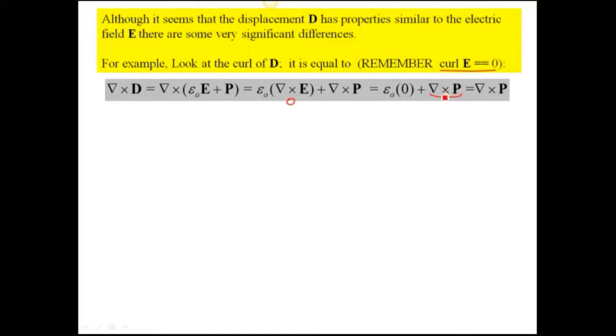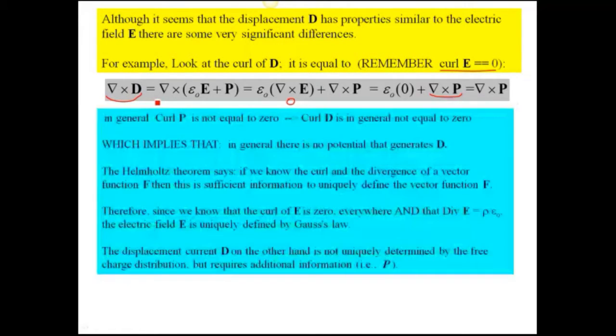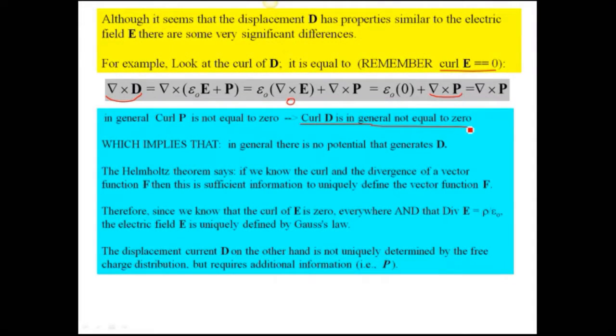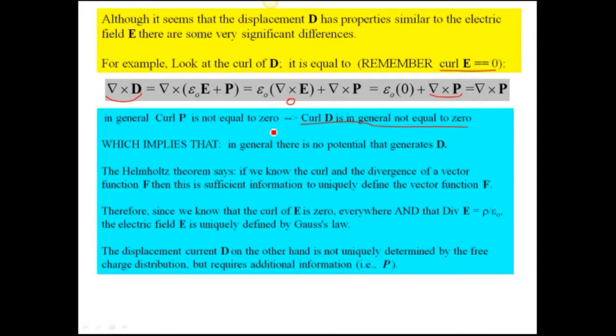If that's the case, curl of D is, in general, not equal to zero. And what that means is that there is no potential that generates D.